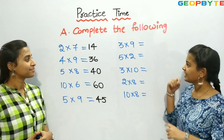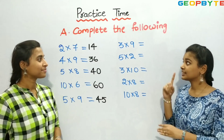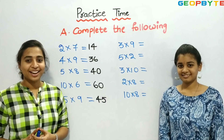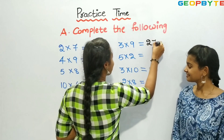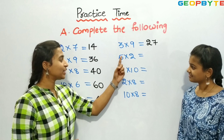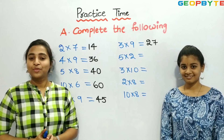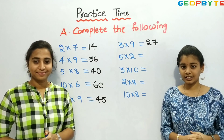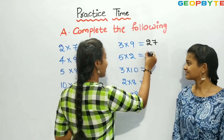Now, let us see the next one: 3 into 9, or 3 times 9. What is the answer? Yes, 3 nines are 27. Let us write 27. Now, let us see the next one: 5 into 2, or 5 times 2. What is the answer? Yes, 5 into 2 is equal to 10. Yes, 5 twos are 10. Let us write 10.